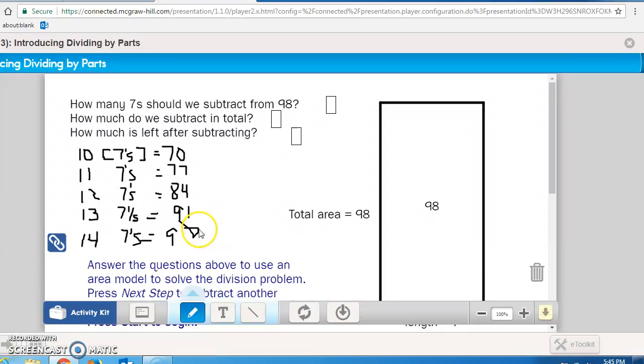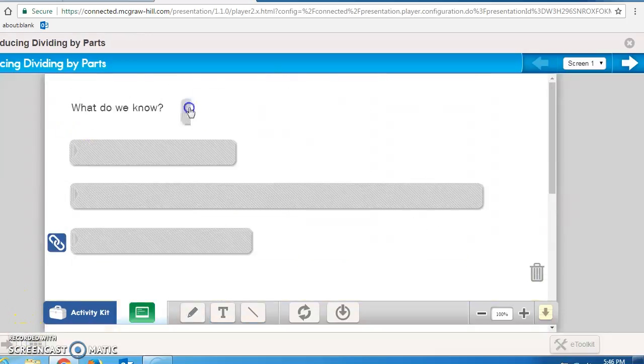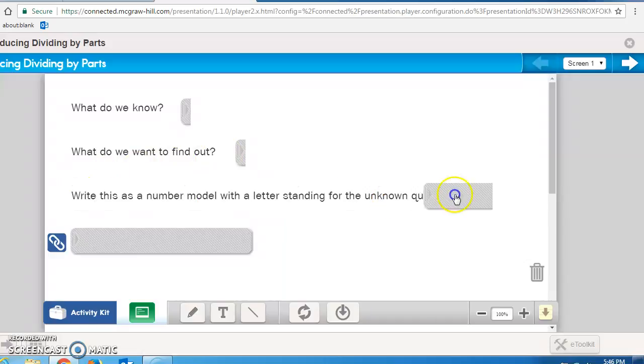So how many feet would it be? Well, let's look. 14 times 7 would give me 98. What did we know from what was written? We wanted to know what we wanted to find out. We also needed to be able to write this as a number model, with a letter standing for the unknown quantity. And finally, we used estimation, the height of the mural, to make sure that our answer made sense.